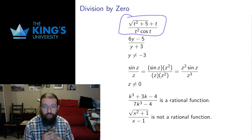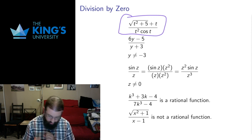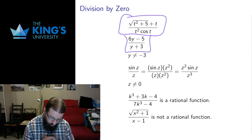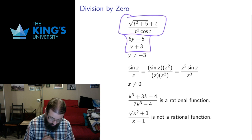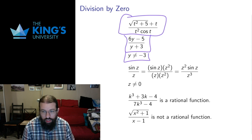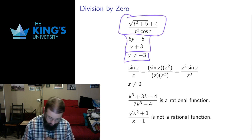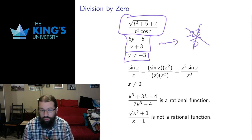The first thing I want to talk about is that whenever we have expressions with variables in them, we have to worry about the potential for division by zero. If I look at the second fraction here — 6y minus 5 over y plus 3 — this is an expression in the variable y. This works for all values of the variable except y equals negative 3, because if I evaluate at y equals negative 3, I get negative 23 in the numerator and zero in the denominator.